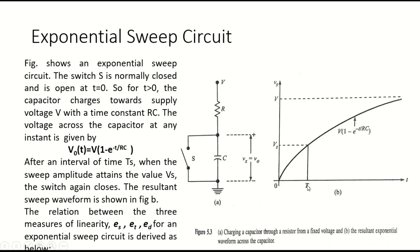Up to this part, if we charge the circuit or collect the voltage, that voltage can be a sweep voltage. After an interval of time TS, when the sweep amplitude attains a value VS, the switch closes again. When the switch gets closed, it forms a short circuit across the capacitor, so the capacitor will not charge further. The resultant sweep waveform is as shown in the figure.